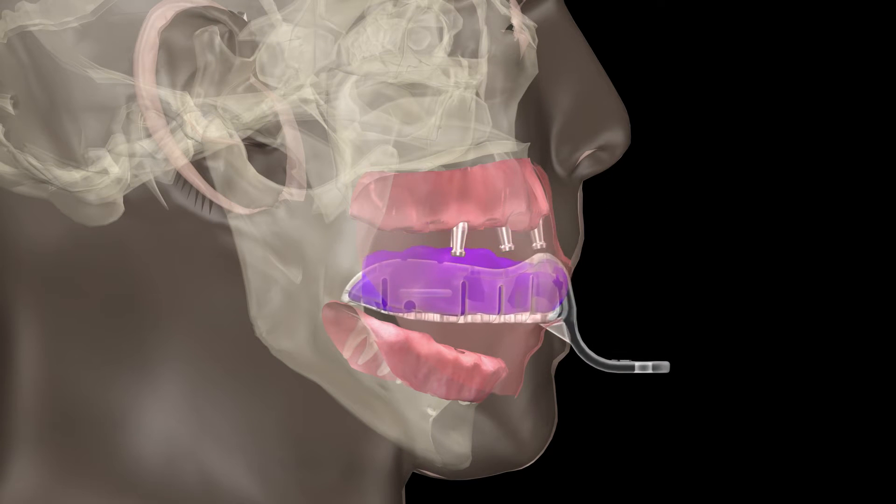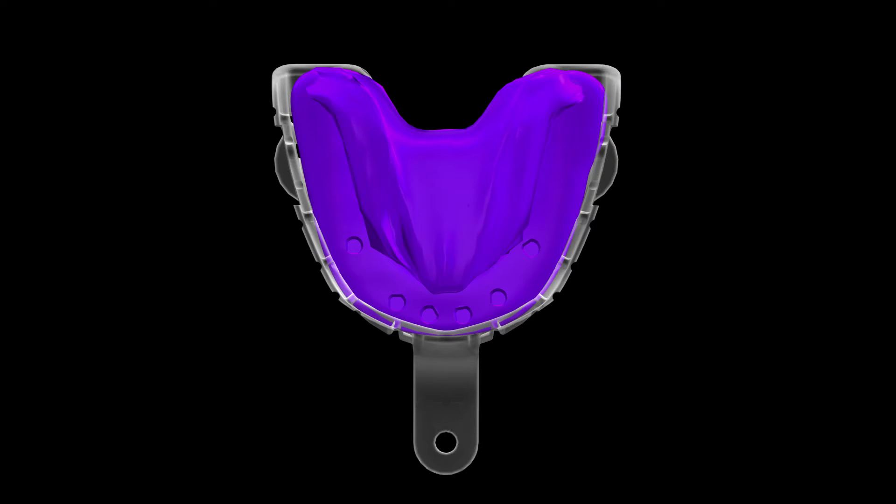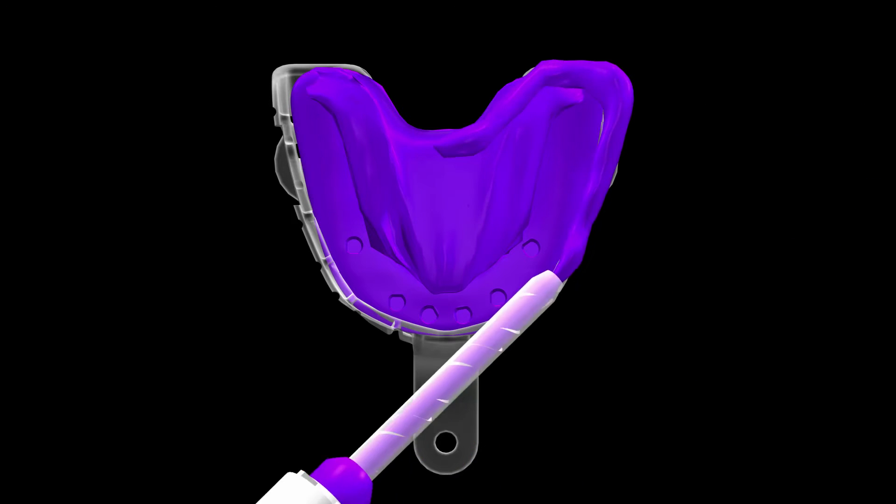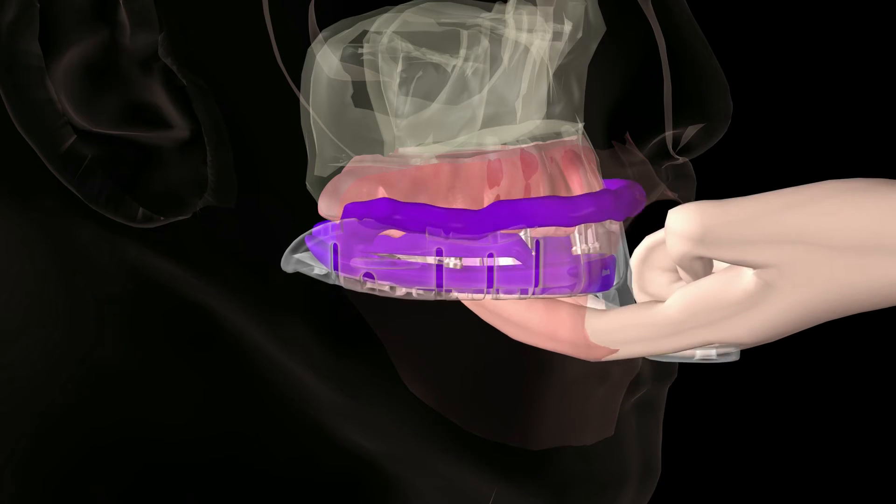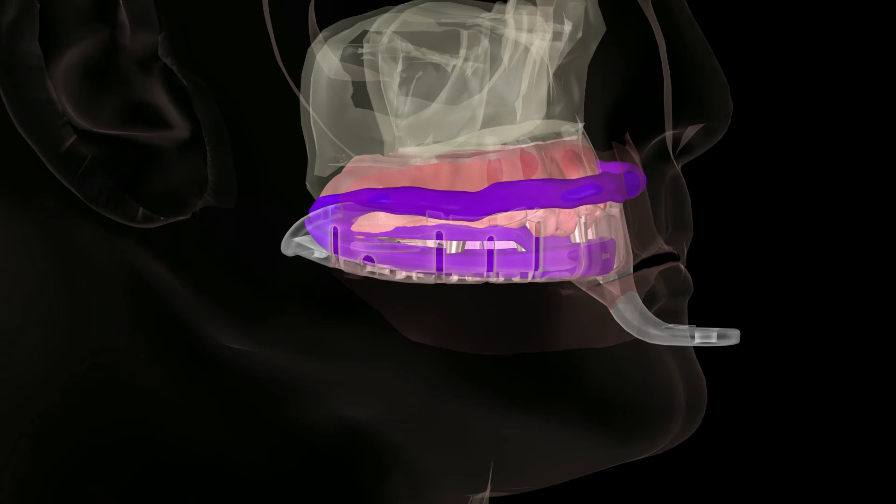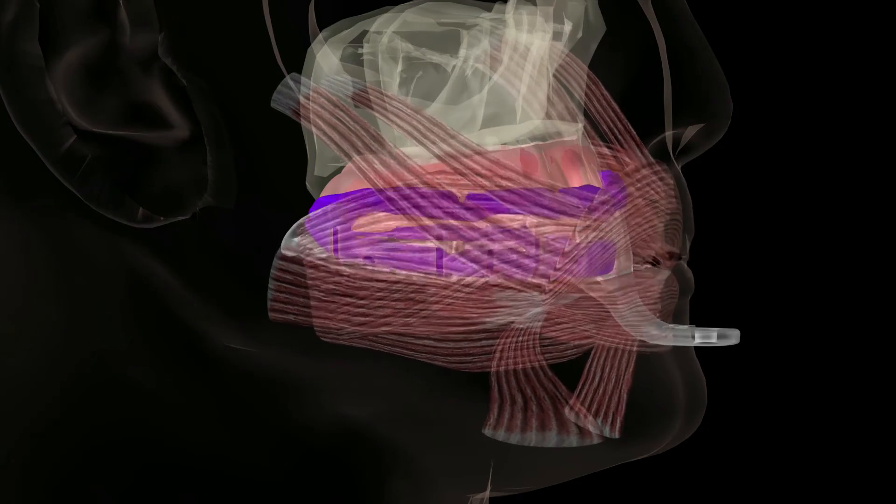Once set, remove and inspect. Remove any excess material as needed. Then, place PVS adhesive on all tray borders and apply the rigid PVS material covering all tray borders and the posterior of the tray to capture necessary peripheral anatomy. Have patient move facial muscles to obtain a functional anatomy.